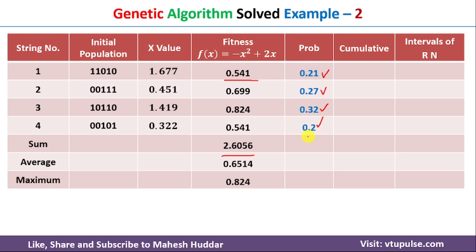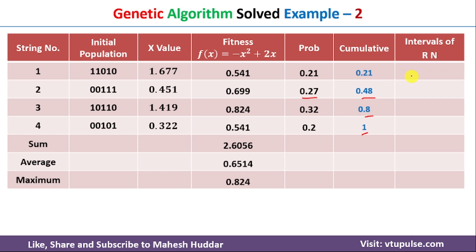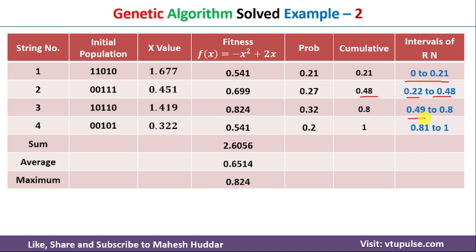Once the individual probabilities are calculated, we compute the cumulative probability. The first is 0.21; the second is 0.21 + 0.27 = 0.48; the third is 0.48 + 0.32 = 0.80; the fourth is 0.80 + 0.20 = 1.0. From the cumulative probabilities we define random number ranges: 0–0.21, 0.22–0.48, 0.49–0.80, and 0.81–1.0.